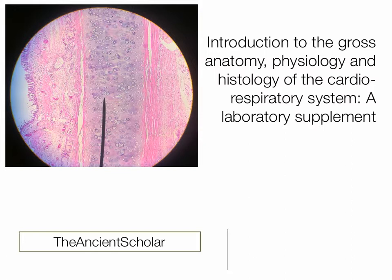I thought we would do not only the gross anatomy of the heart and lungs — dissecting the heart, appreciating structures like the chordae tendineae, papillary muscles, myocardium, differences in walls and valves — but also place the lungs on a ventilator to show how PEEP affects the lungs and how we can recruit alveoli. I also wanted to supplement the lab by looking at the microscopic anatomy of the major tissues involved in the cardiorespiratory system, specifically some histology.